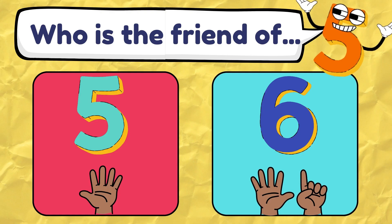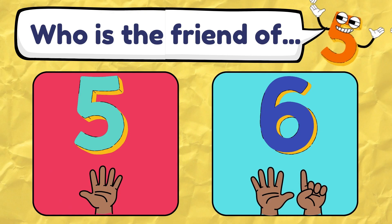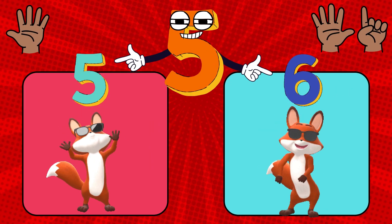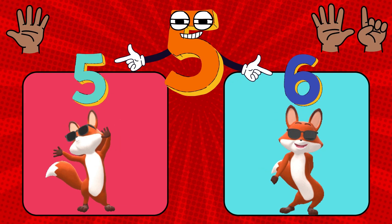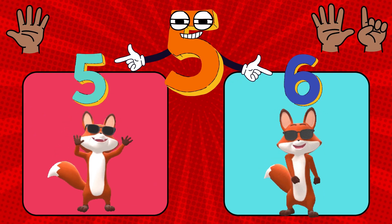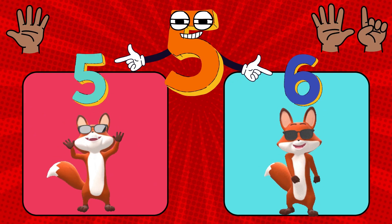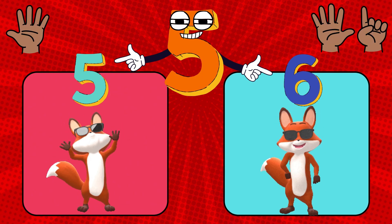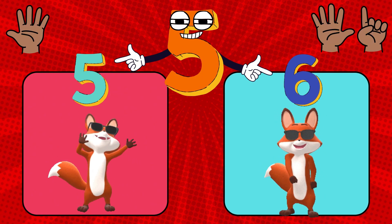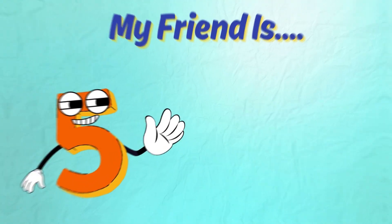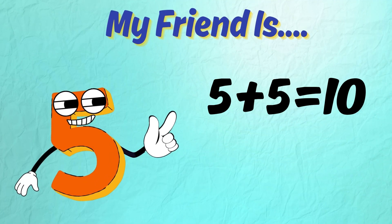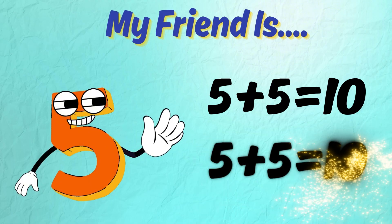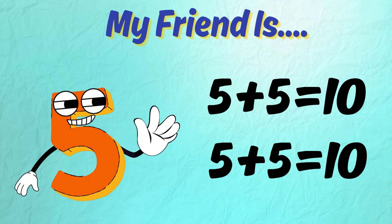Who is the friend of 5? Is it 5 or is it 6? Do the matching dance! You got it — the friend of 5 is also 5. 5 plus 5 is 10. The commutative property says that switching the numbers still gives you the same answer.